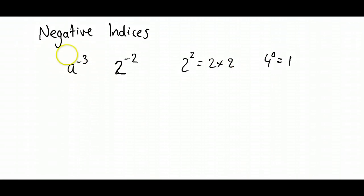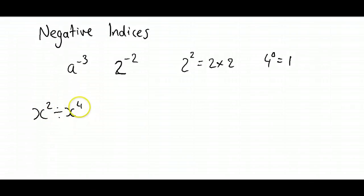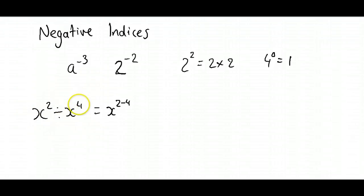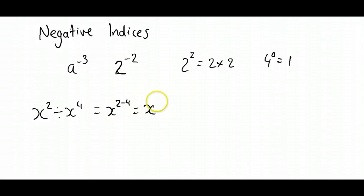Here's how to think about it. Let's say we had an equation like x to the power of two divided by x to the power of four. The second index law tells us that to work that out we go x to the power of two minus four. When we're dividing two things with the same base but different indices, we go the first power minus the second power to that same base. So two minus four gives us x to the power of negative two. We've got a negative index here — x to the power of negative two. Let's see how we arrive at that result.